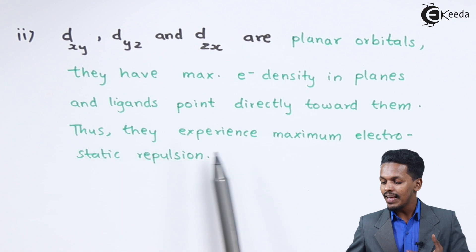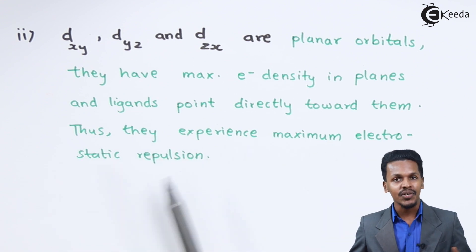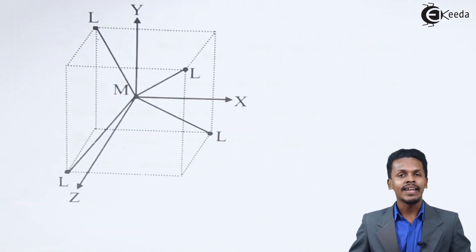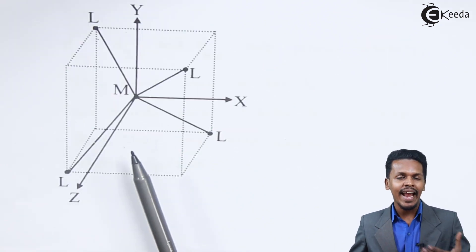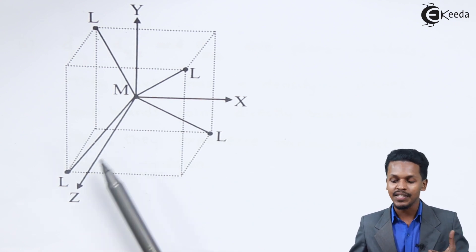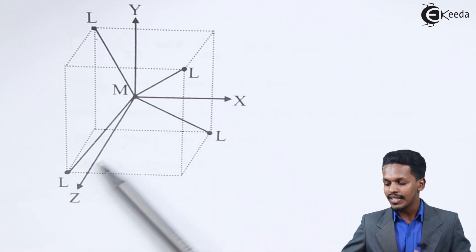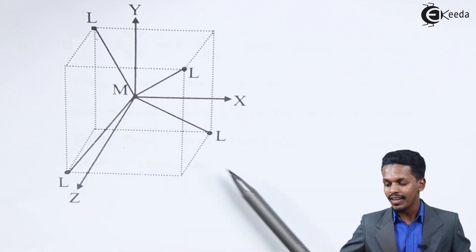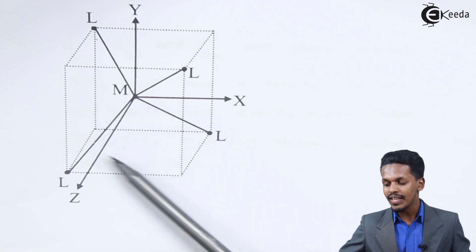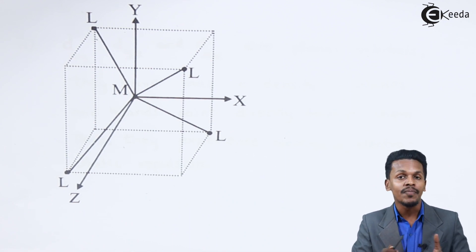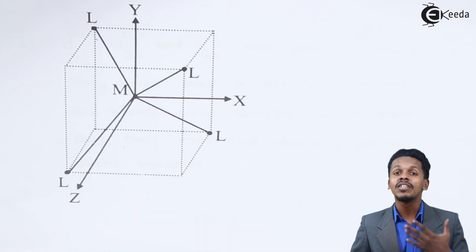Because dxy, dyz, and dzx have more electron density in the plane and the ligands are approaching in those planes, they experience maximum electrostatic repulsion. This is how the splitting of the d orbitals occurs in a tetrahedral complex.